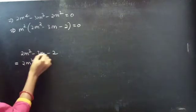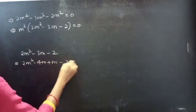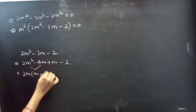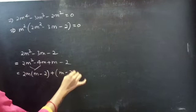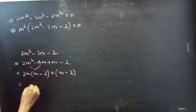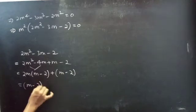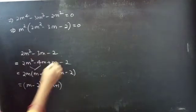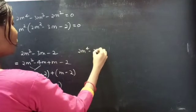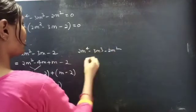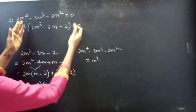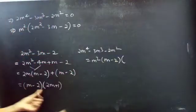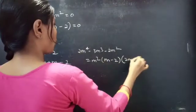Let's factorize the polynomial 2m² - 3m - 2. We split -3m as -4m + m. Then we take 2m common from the first two terms to get 2m(m - 2). The next two terms give (m - 2). So taking (m - 2) common, we get (m - 2)(2m + 1) as the factors.